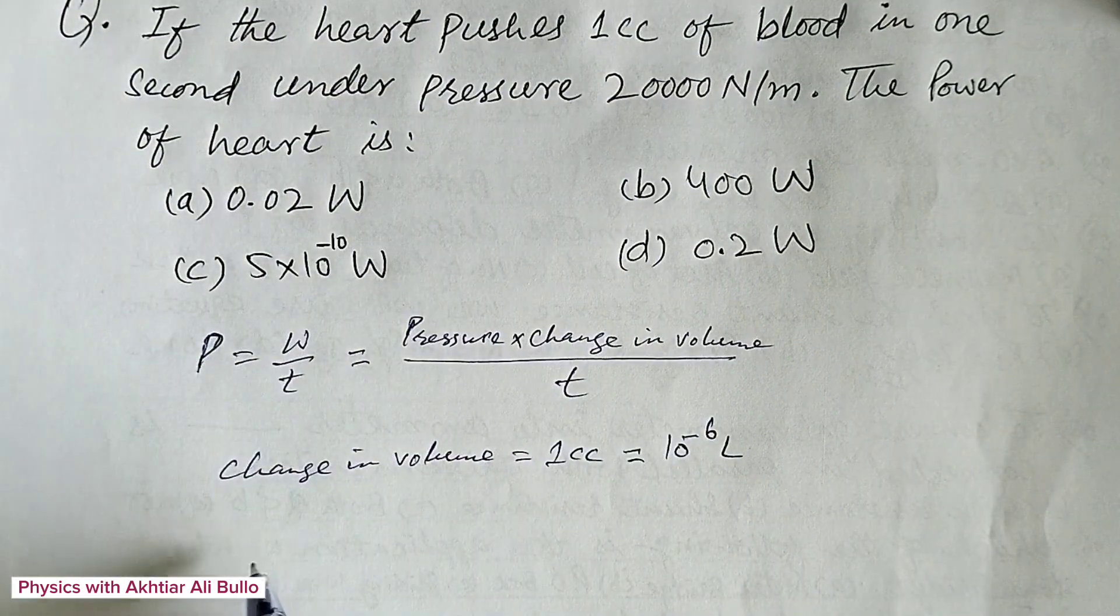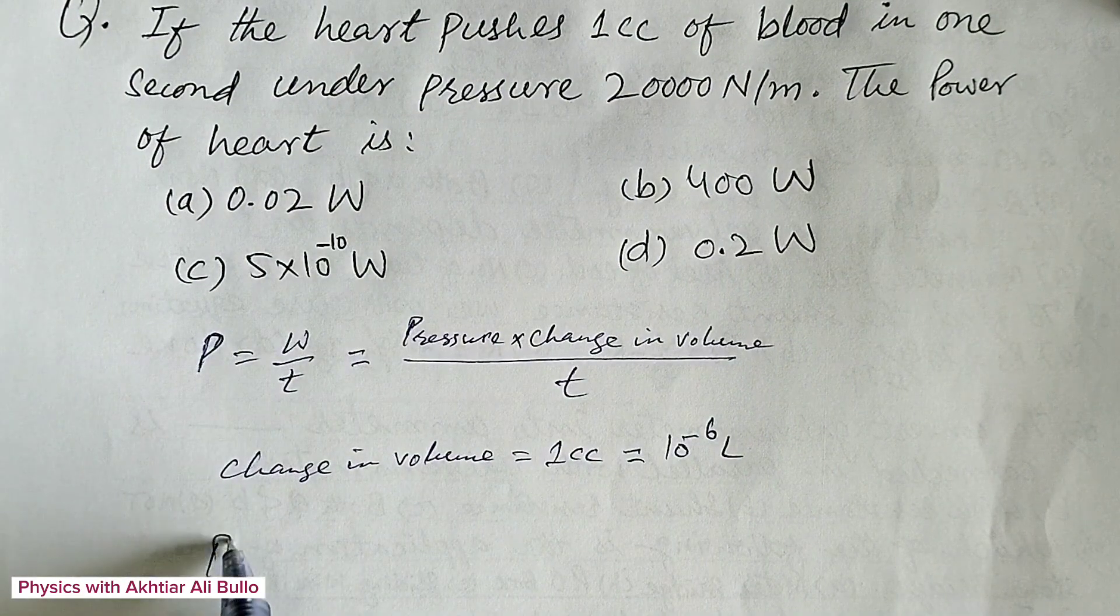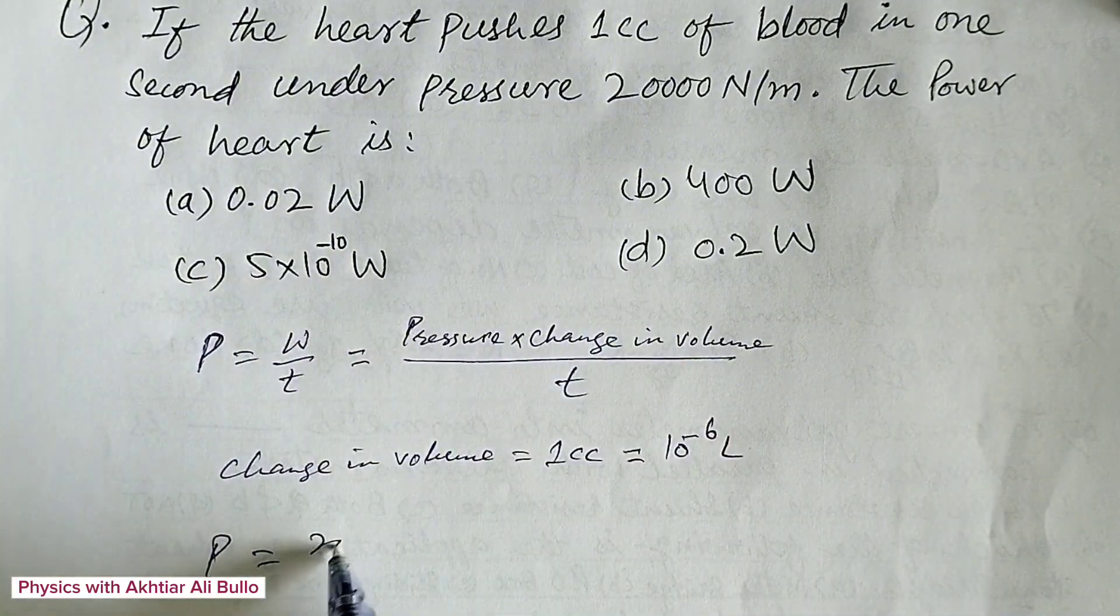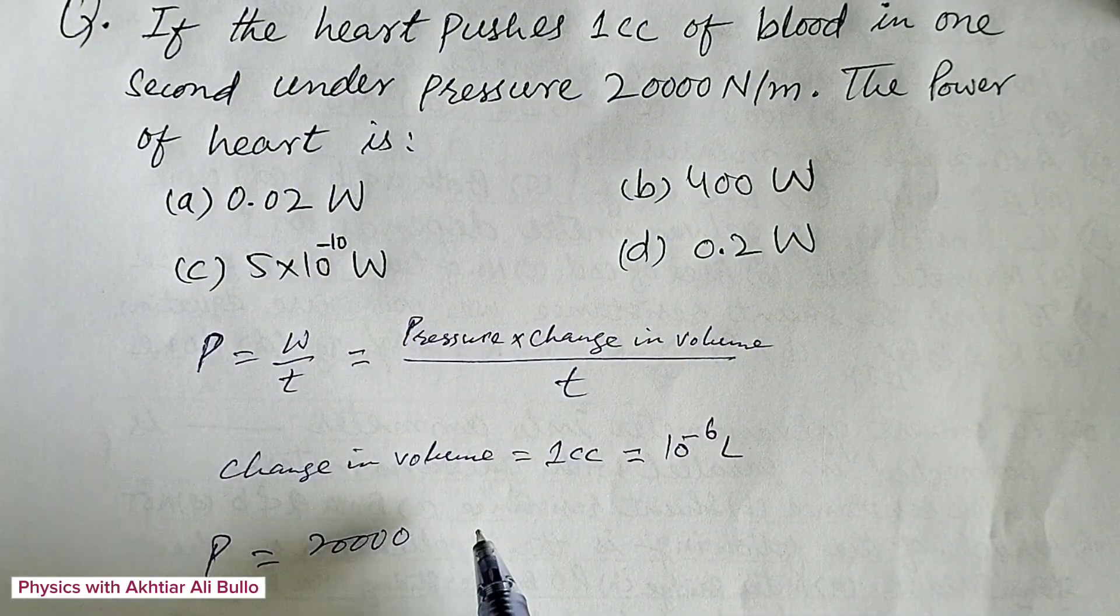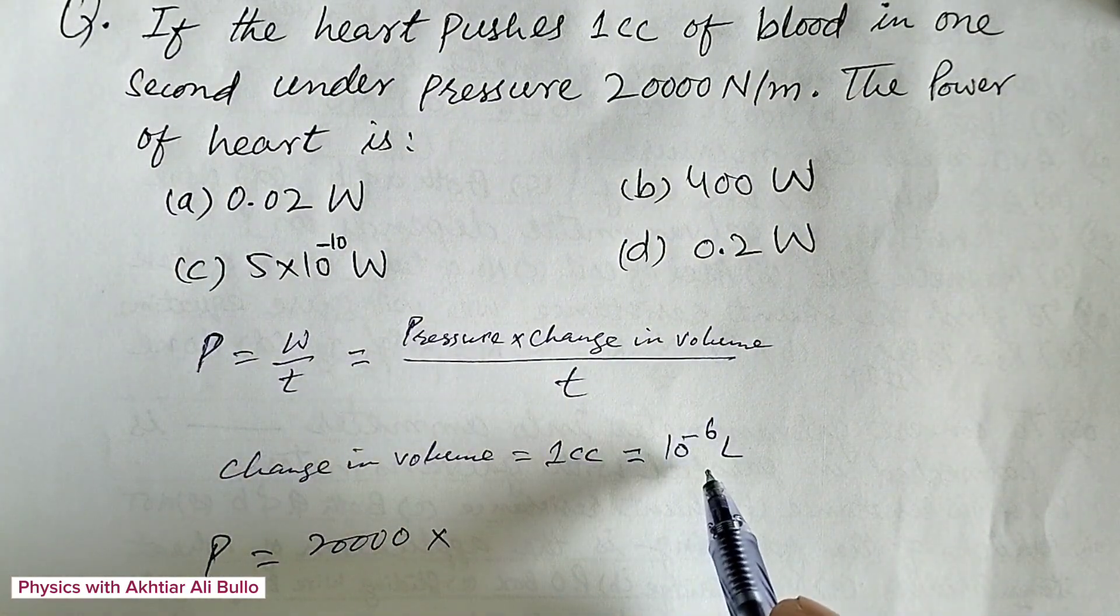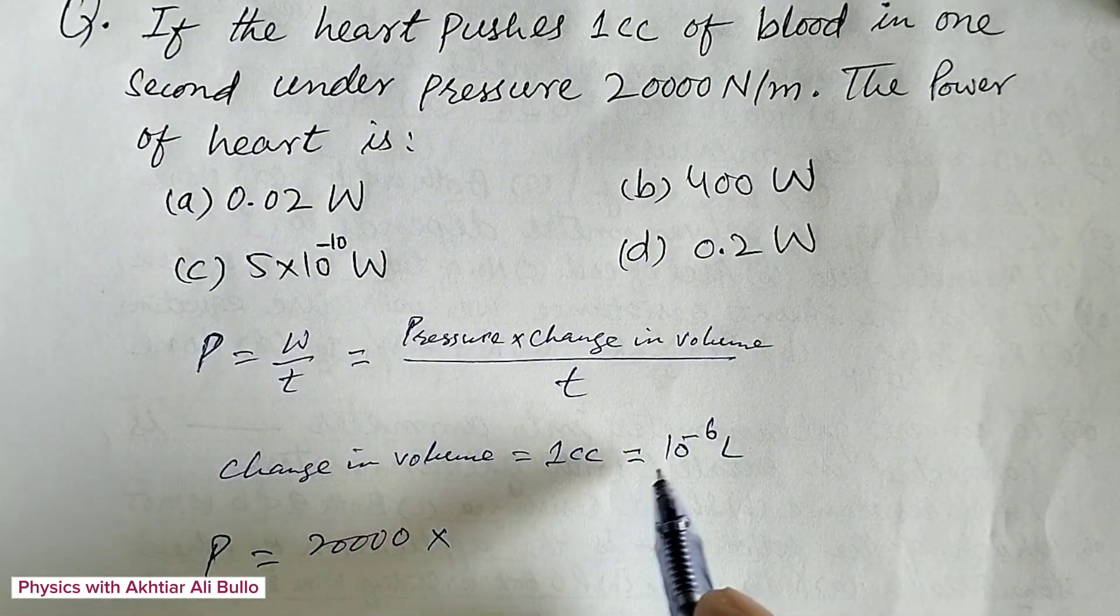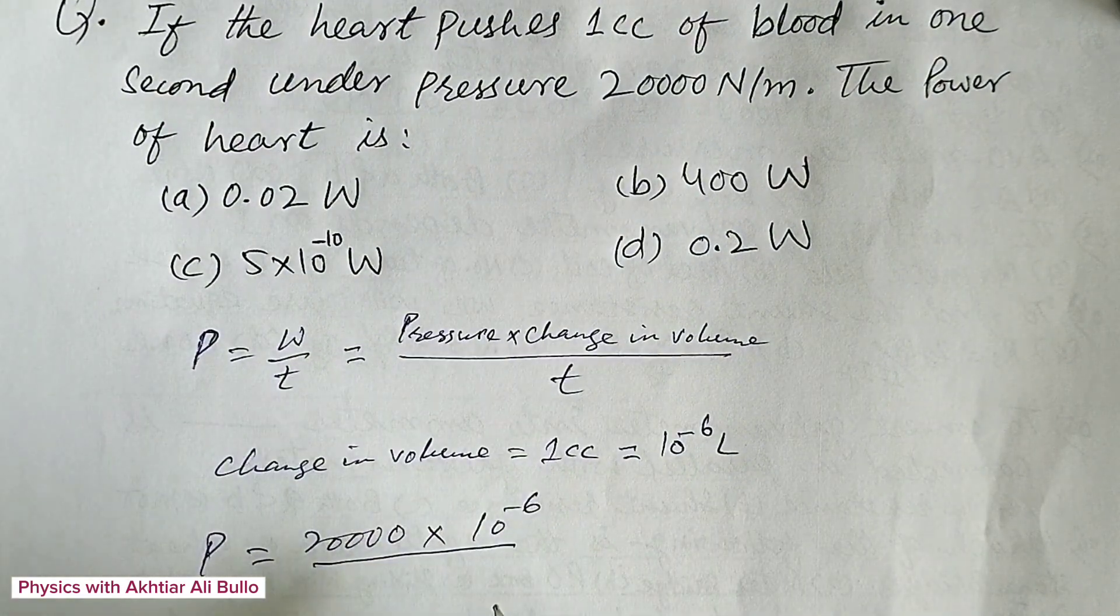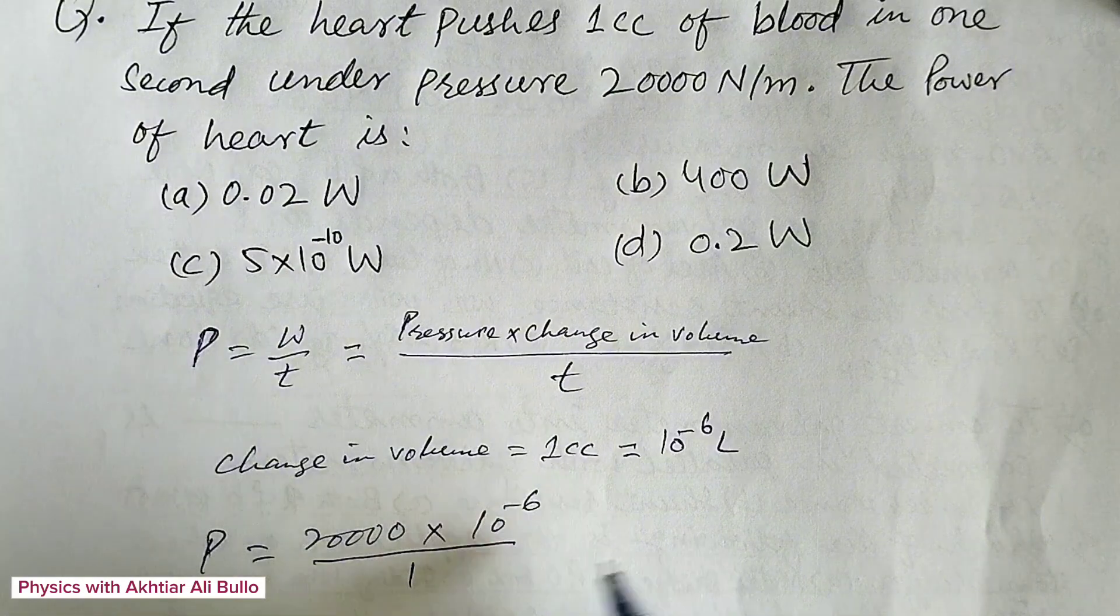By placing the values, power will be obtained as pressure is 20,000 Newton per meter squared into change in volume is equal to 10 raised to power minus 6 divided by time, which is 1 second.